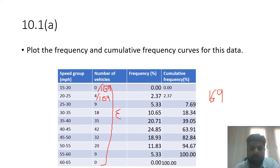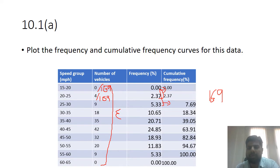For cumulative frequency, you add the values progressively: the first value is 0, the second is the sum of the first two, the third is the sum of the first three, and so on.